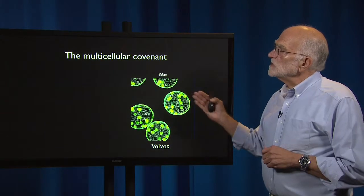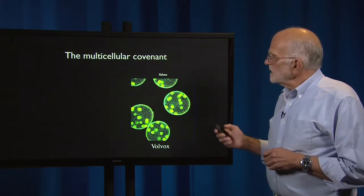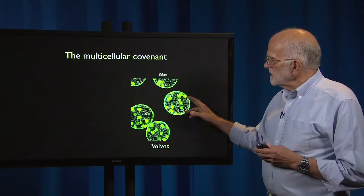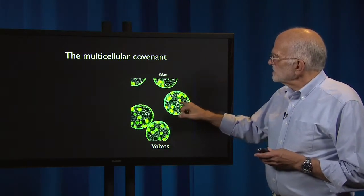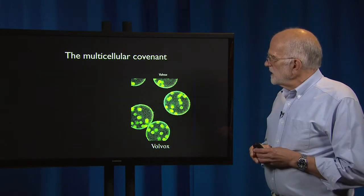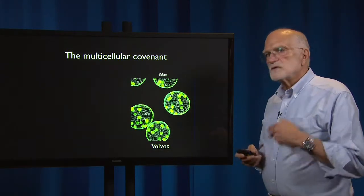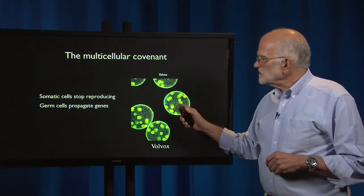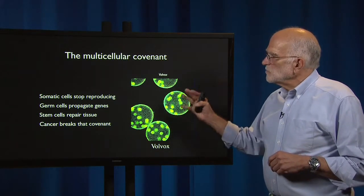The second idea in why we are vulnerable to cancer is the multicellular covenant. This picture is designed to elicit the notion of multicellularity — this is a multicellular alga, and the bright green dots are the reproductive cells. The smaller darker green dots are the somatic cells engaged in photosynthesis. They gather the energy and give it to the reproductive cells, which get the genes into the next generation. So somatic cells stop reproducing, germ cells propagate the genes, stem cells repair tissue — and cancer breaks this covenant.